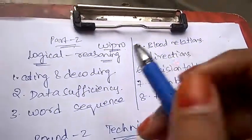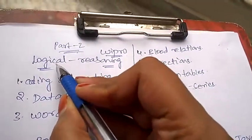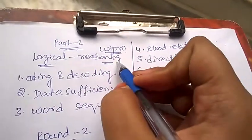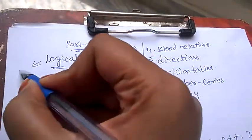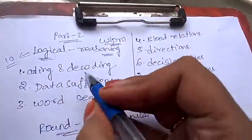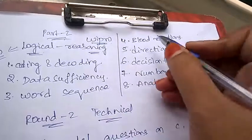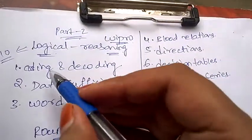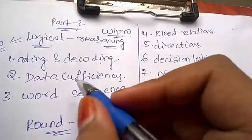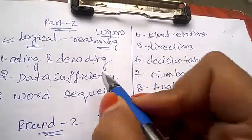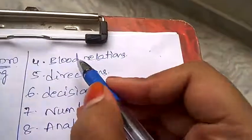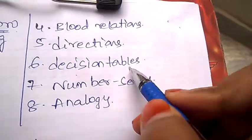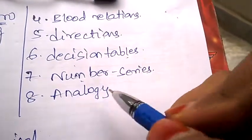Now let's continue with the syllabus of logical reasoning. Under logical reasoning there will be 10 questions asked. These are the topics from which questions will appear: coding and decoding, data sufficiency, word sequence, blood relations, directions, decision tables, number series, and analogy.